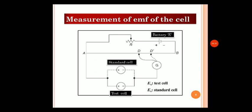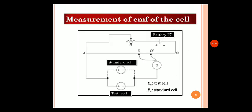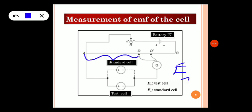The null point is the point at which no current flows in the galvanometer. When this point is reached, the position is noted and the distance AD is measured. This null point distance AD is directly proportional to the EMF of the test cell — that is, E subscript X is directly proportional to AD.